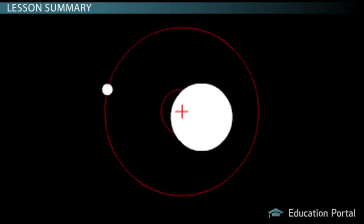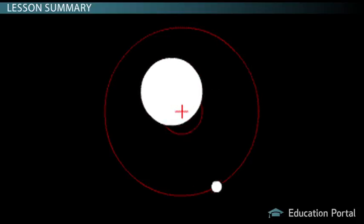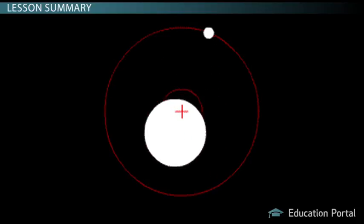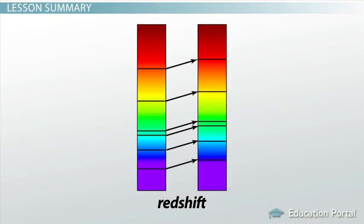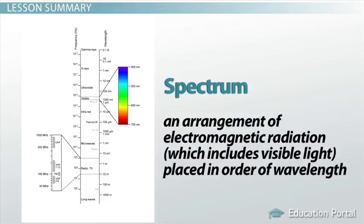Such planets can be detected by observing the gravitationally induced wobbling of a parent star as a planet orbits around it. This causes a Doppler shift, which can be detected in the star's spectrum. A spectrum is an arrangement of electromagnetic radiation, including visible light, placed in order of wavelength.